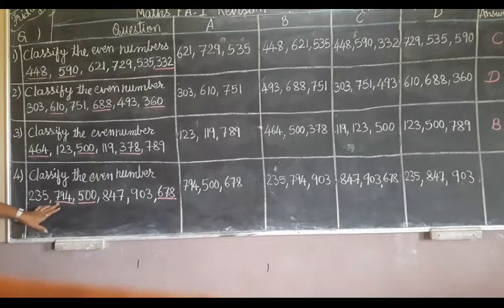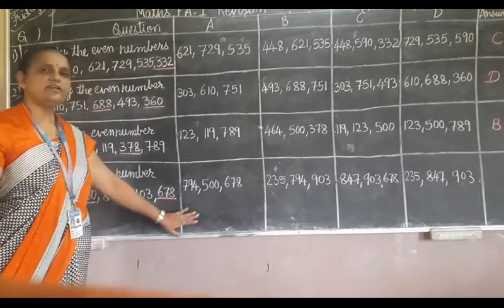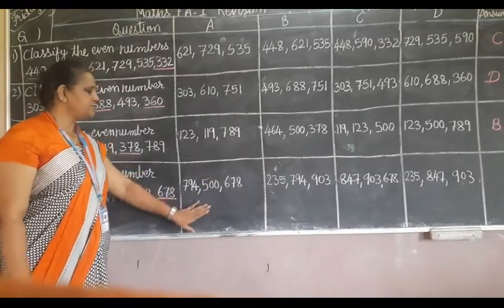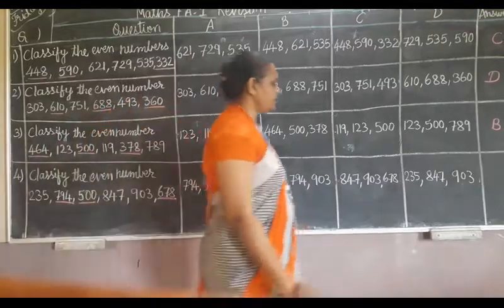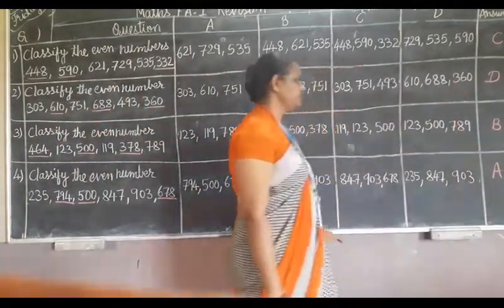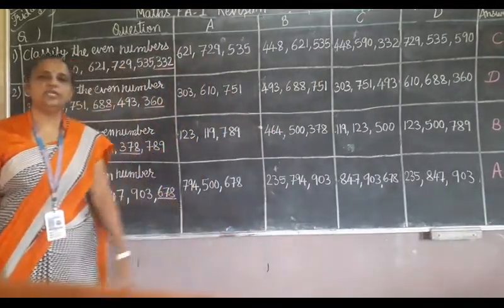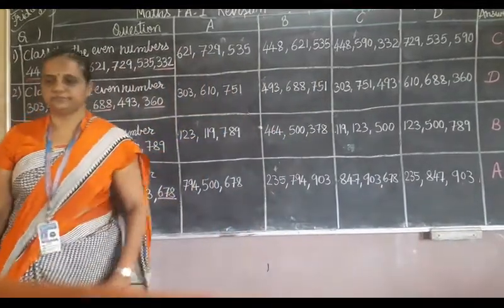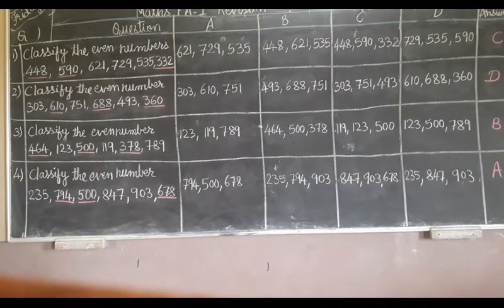Which are the even numbers? 794, 500, 678. A option is the even number, so click on A option. Save it and go to the next question. Note: 447 — 7 is an odd number. Thank you.